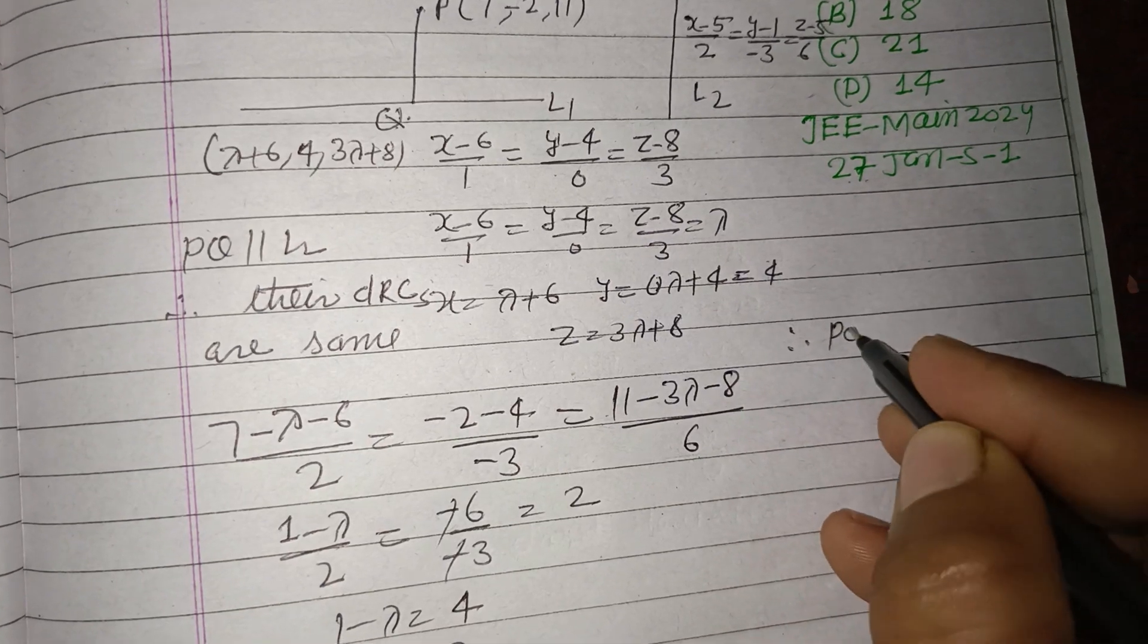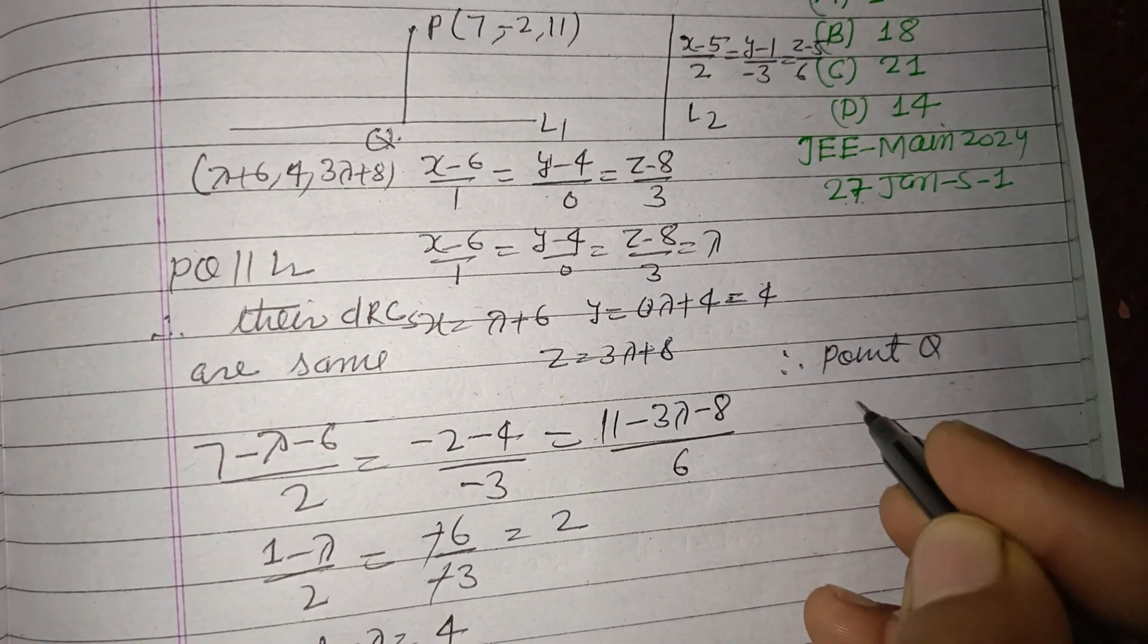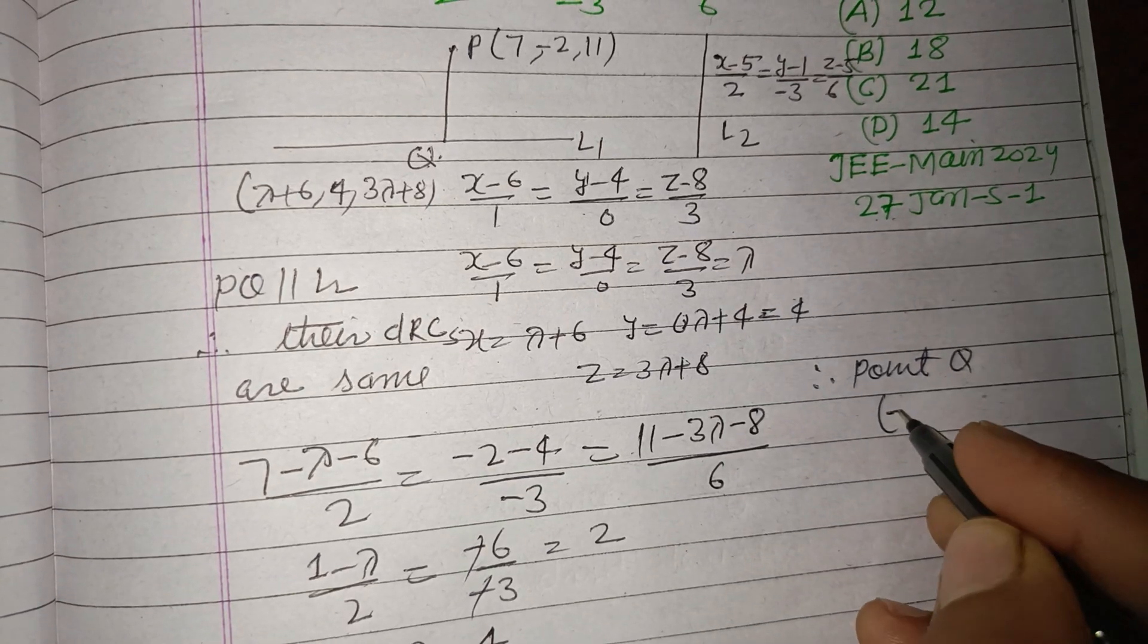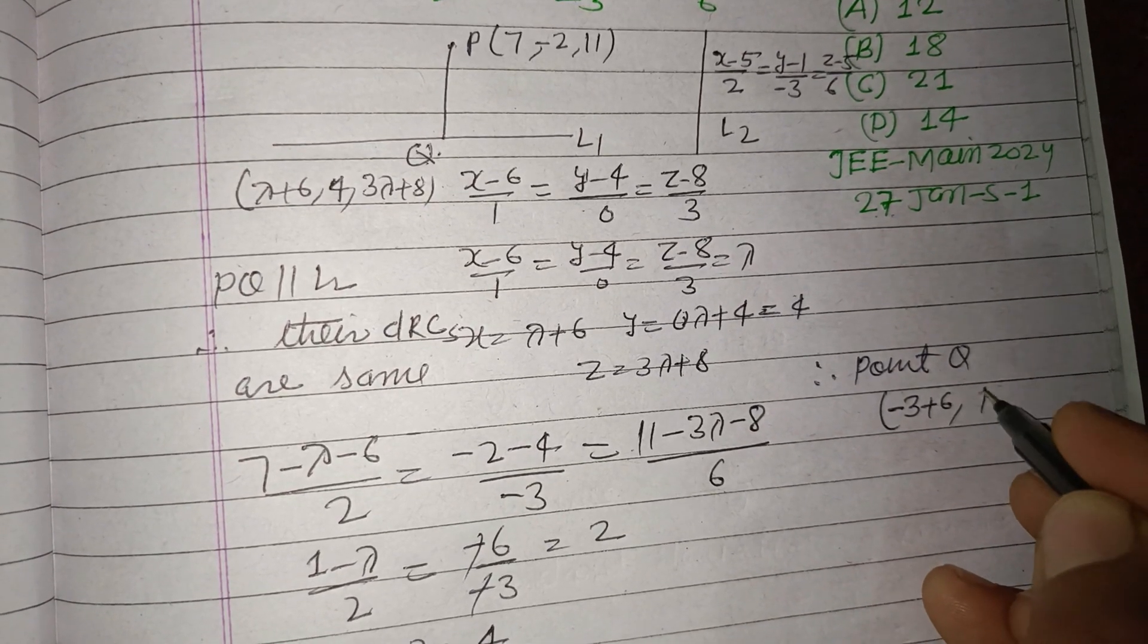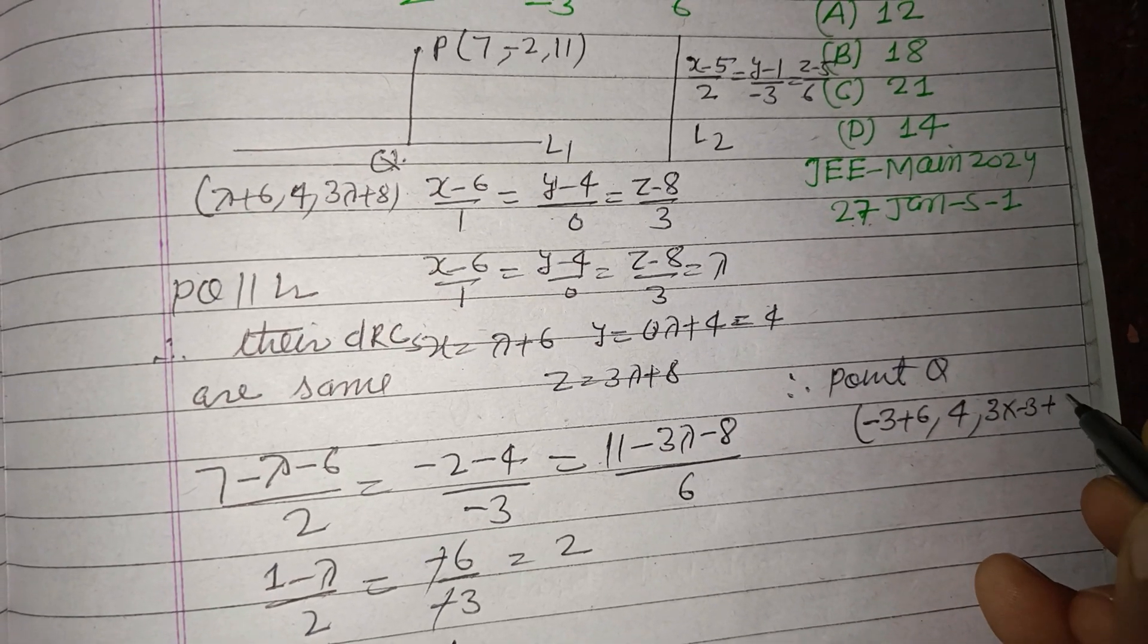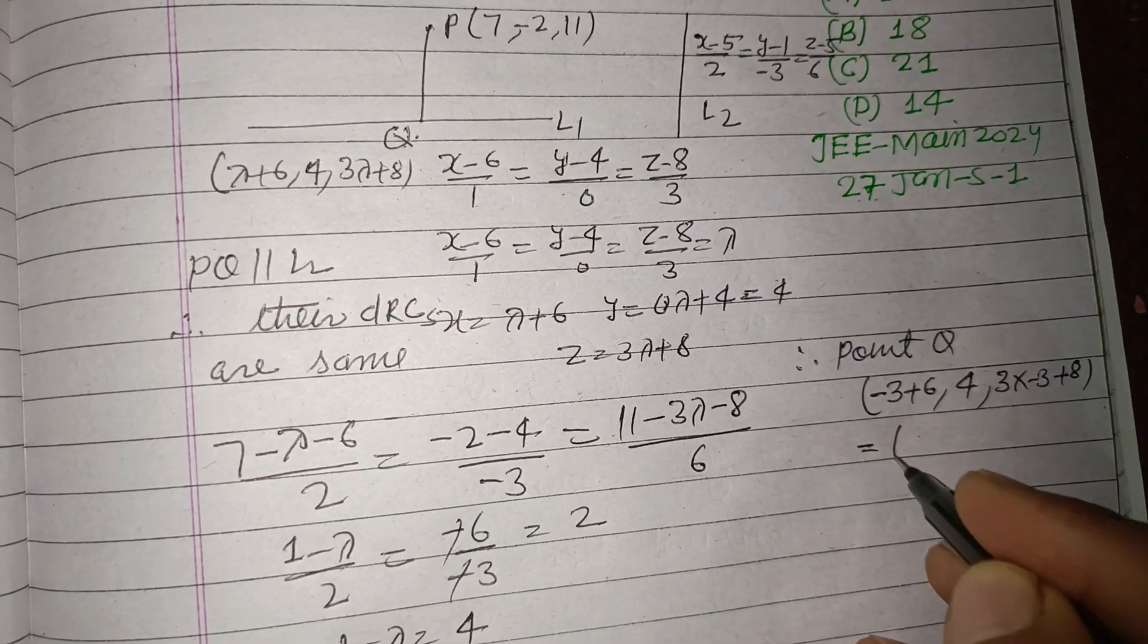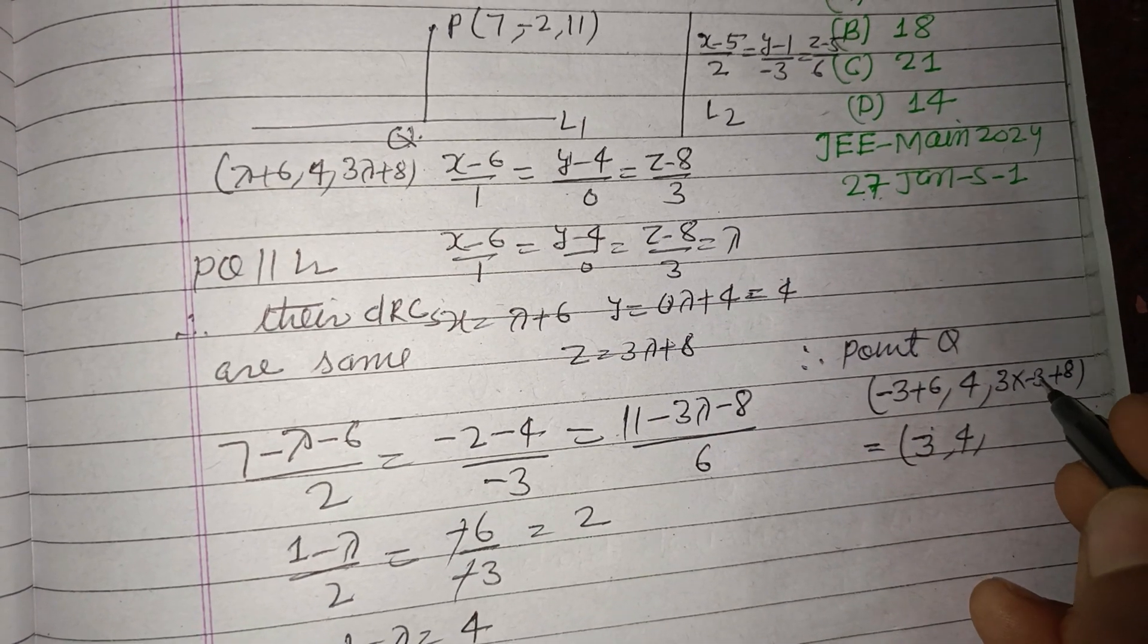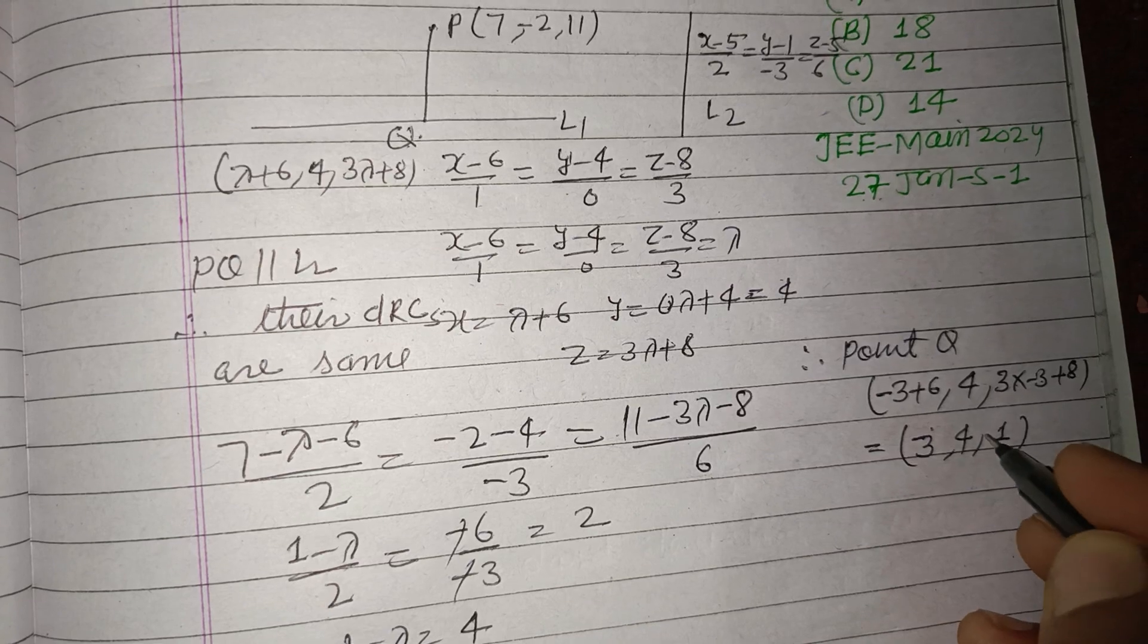point Q becomes (λ+6, 4, 3λ+8) = (-3+6, 4, 3(-3)+8) = (3, 4, -1).